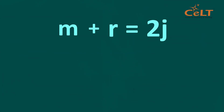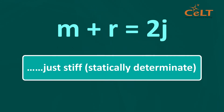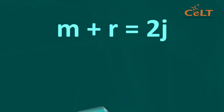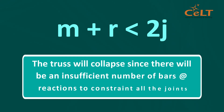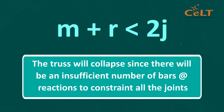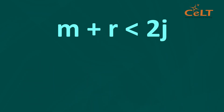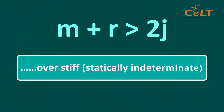If M plus R equals to 2J, the truss is just stiff or statically determinate. If M plus R is less than 2J, the truss is under stiff, forming a mechanism and is unstable — meaning the truss will collapse due to an insufficient number of bars or reactions to constrain all the joints. If M plus R is more than 2J, the truss is over stiff or statically indeterminate.